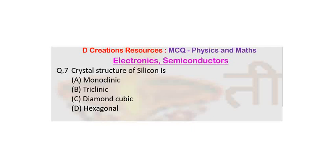And the question is: crystal structure of silicon. The options are A: monoclinic, B: triclinic, C: diamond cubic, and D: hexagonal.